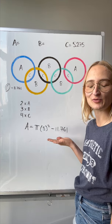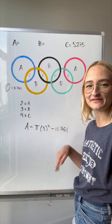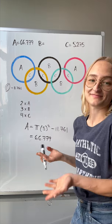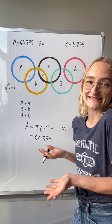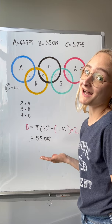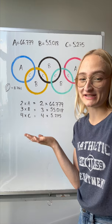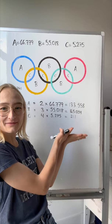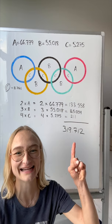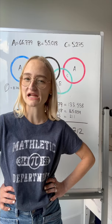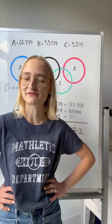We subtract the weird shape area from the area of the smaller circle: pi r squared minus 11.761 gives us 66.779. Finding B is easy — we just subtract that number twice. We multiply each area by the number of times it occurs and add them all up: 319.712. What a shame there's no category for Olympic math nerd.